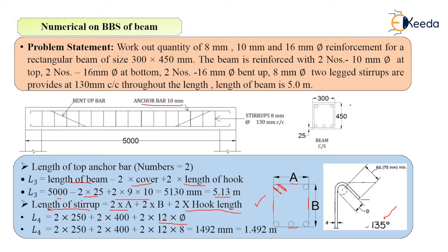Width of beam is 300 mm, so a equals 300 minus 25 minus 25 equals 250 mm. Total depth is 450 mm, so b equals 450 minus 25 minus 25 equals 400 mm. Hook length is 2 times 12 times 8 mm (stirrup diameter). Putting in all values: 2 times 250 plus 2 times 400 plus 2 times 12 times 8. This gives 1492 mm or 1.492 meters.